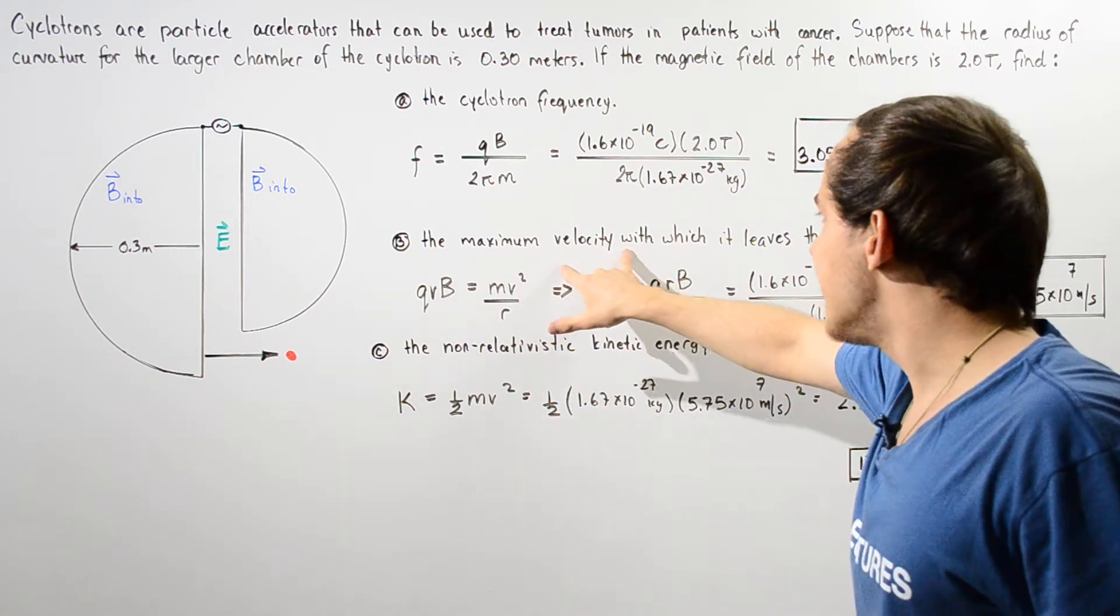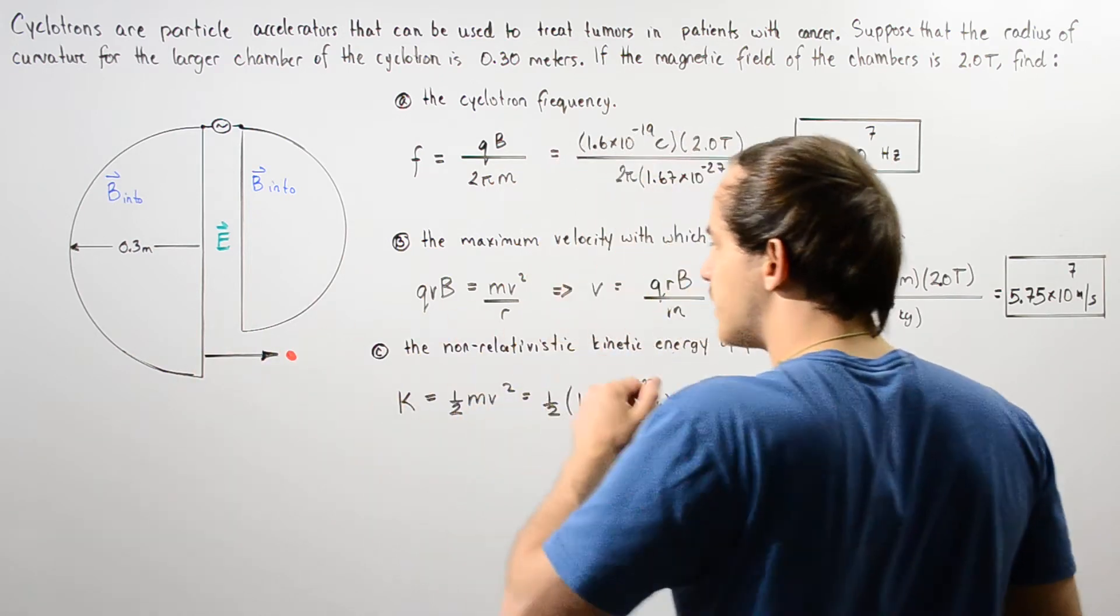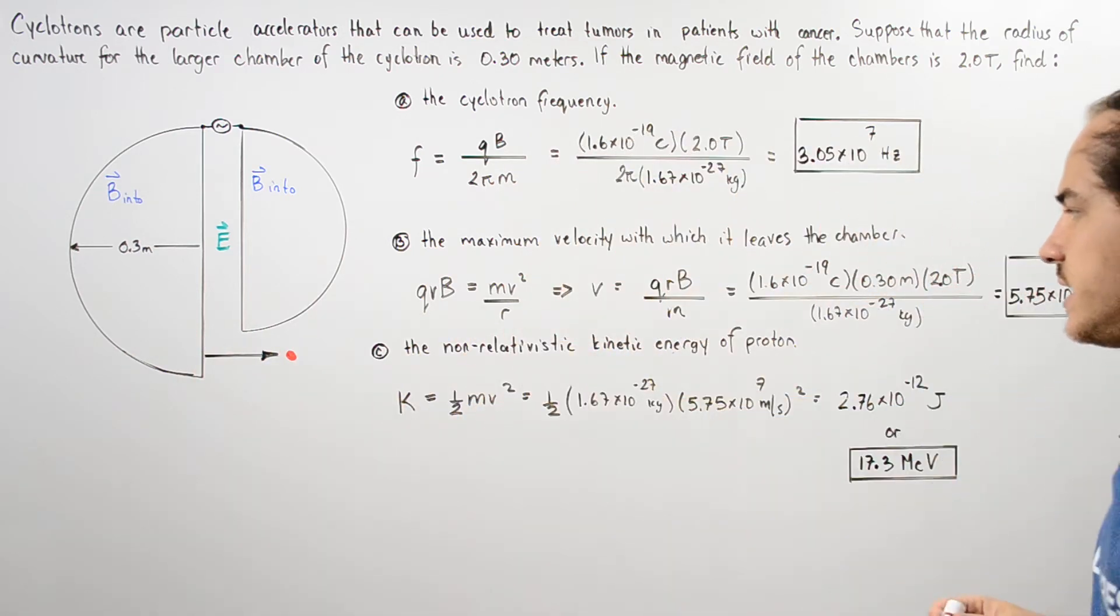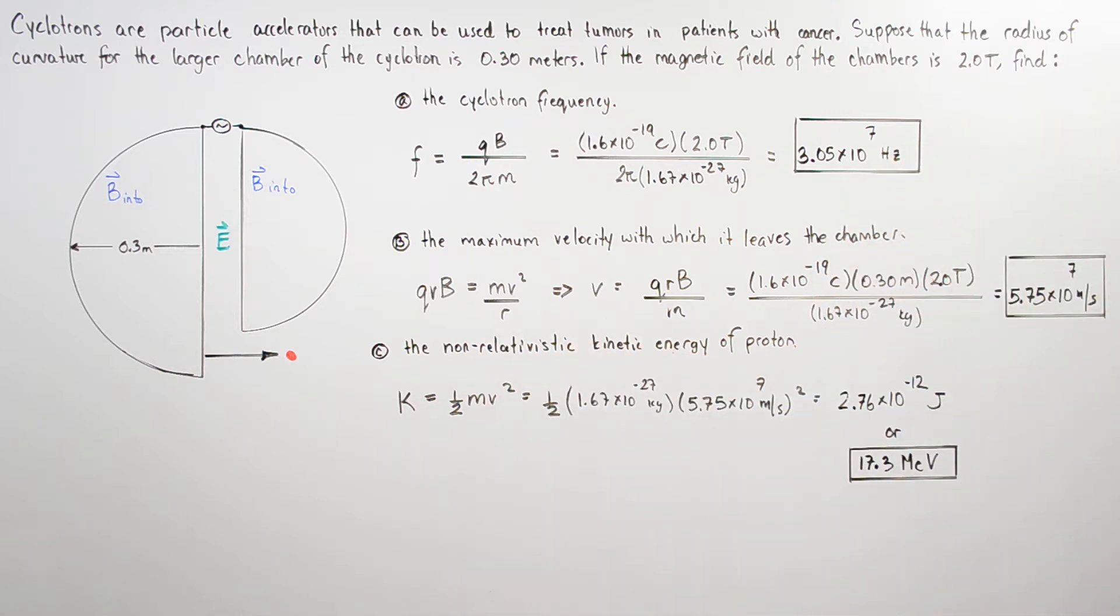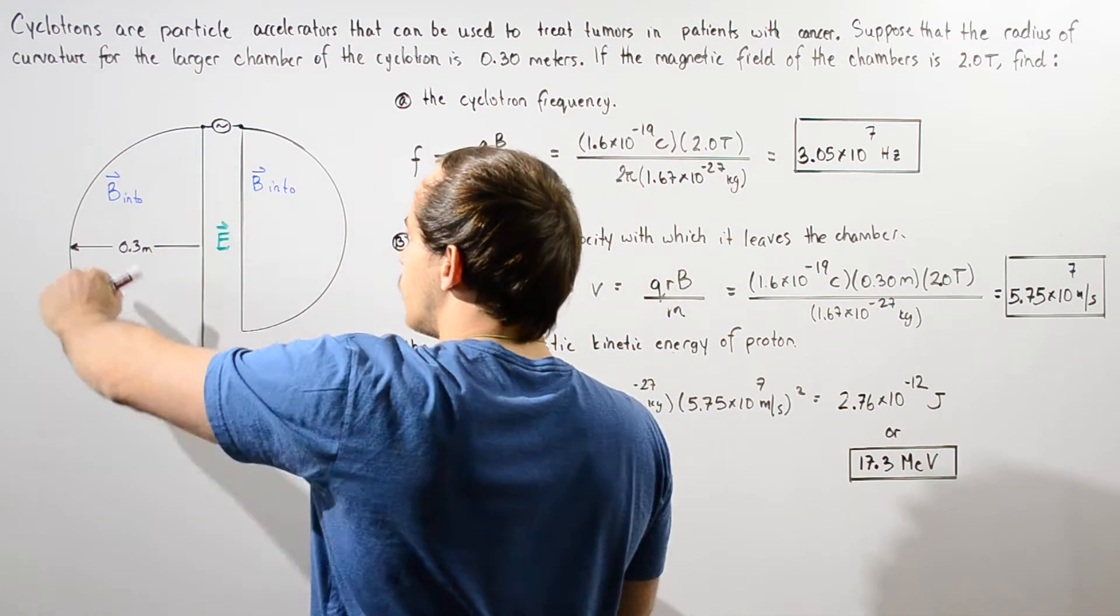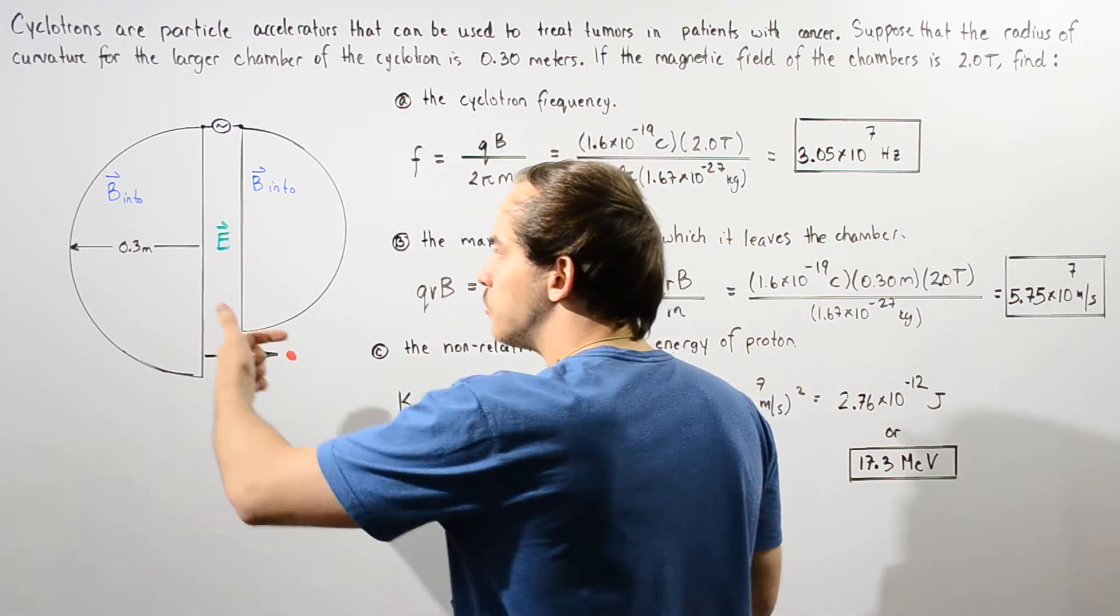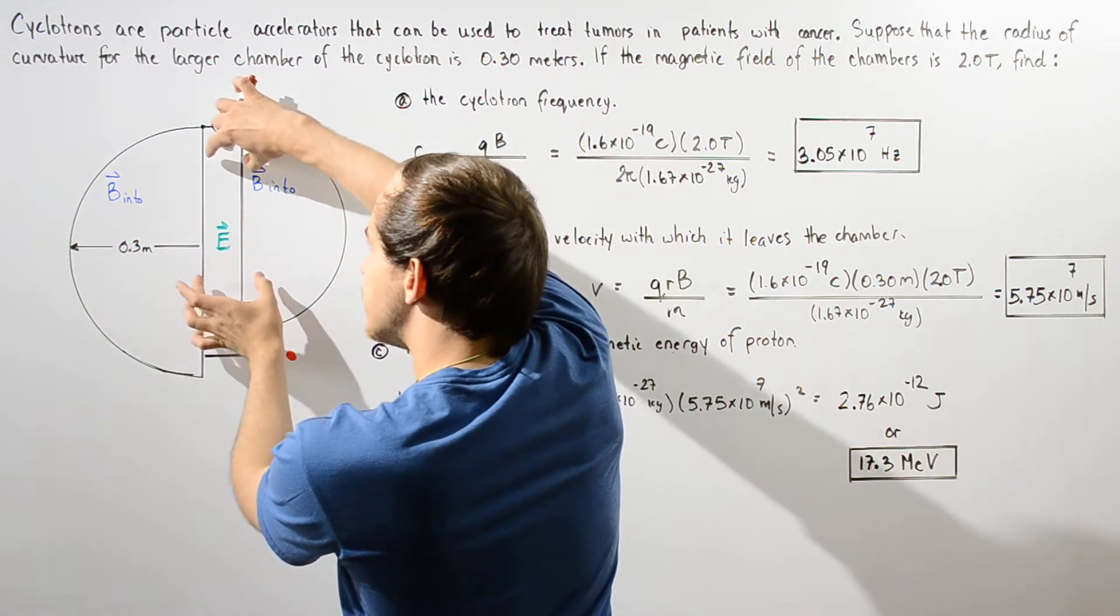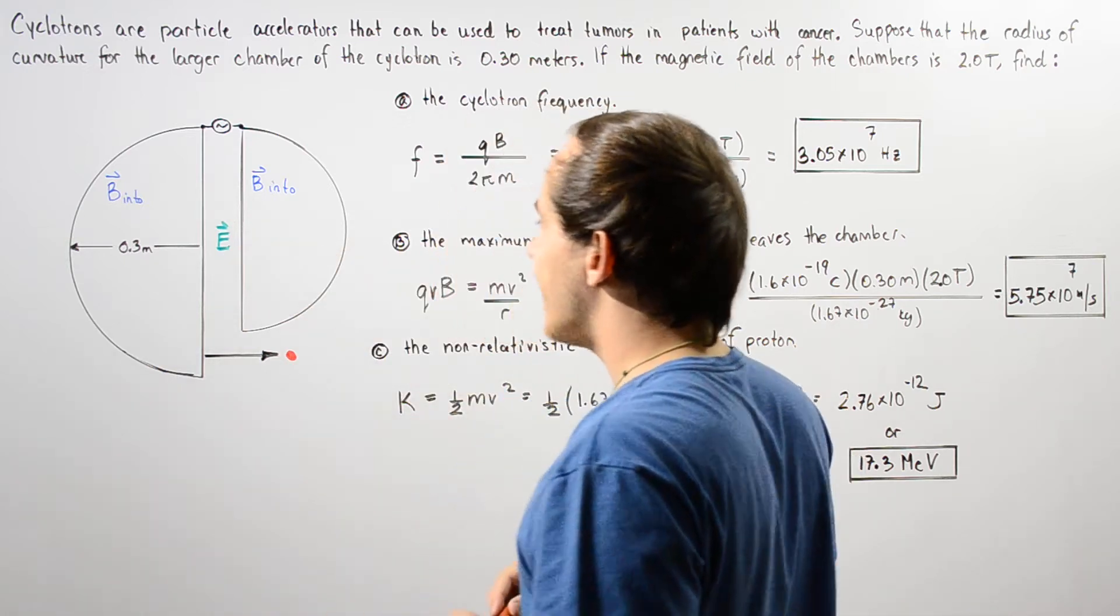In part B, the maximum velocity of that proton as it leaves the cyclotron shown in this diagram, and in part C, the non-relativistic kinetic energy of that proton. So basically inside these chambers we have our proton that is moving in a circular pathway, and as the proton moves inside this midsection it accelerates as a result of that electric field created by our electric force.